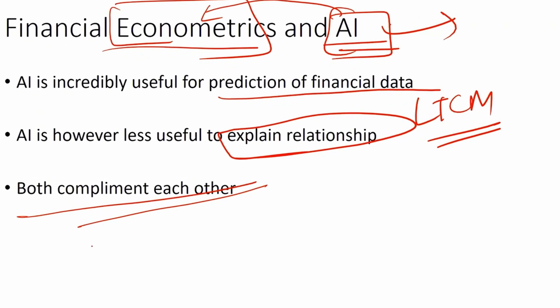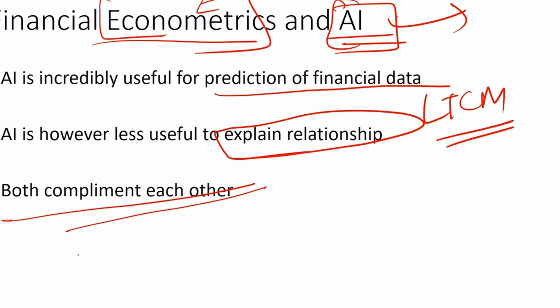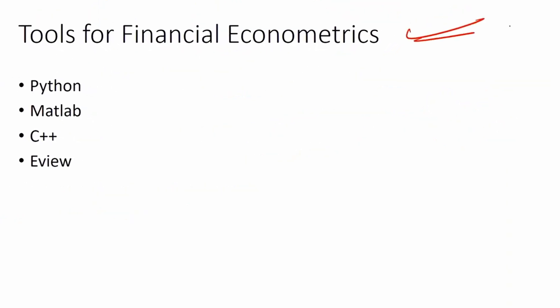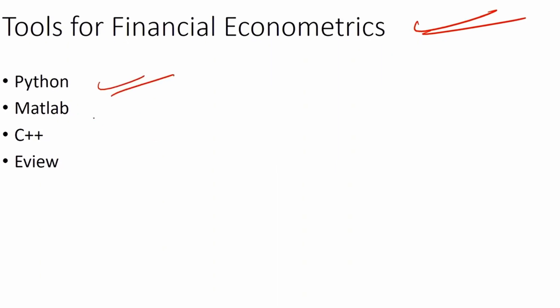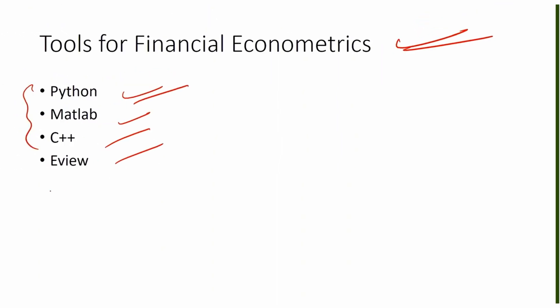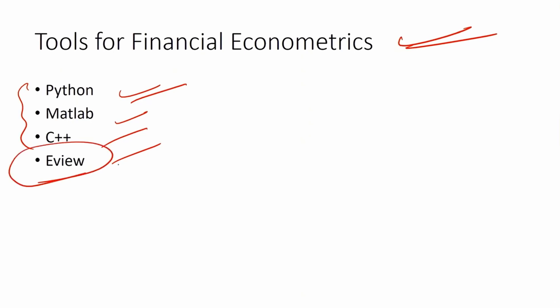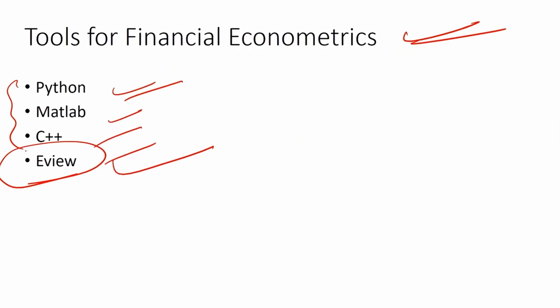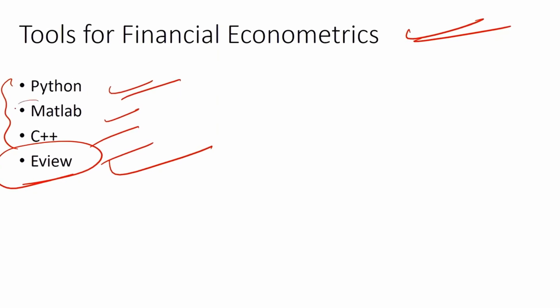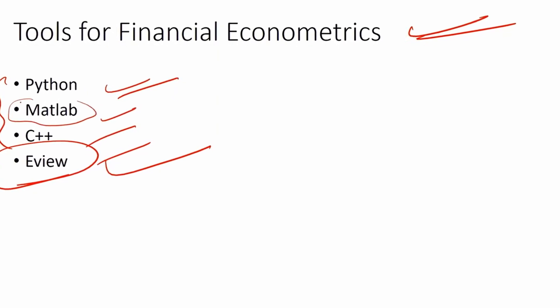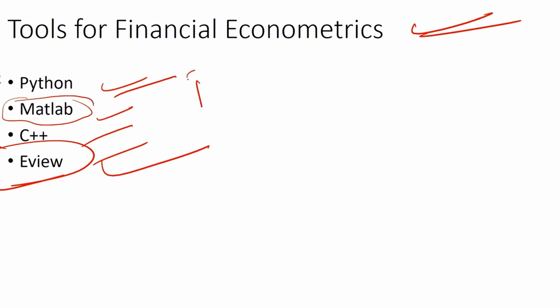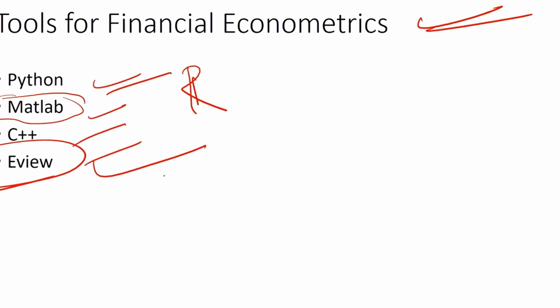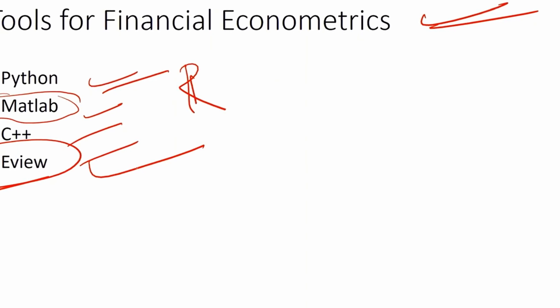Some of the tools that you can use in financial econometrics: Python, MATLAB, C++, EViews. EViews is not open source, but it's used more in academia. MATLAB is obviously proprietary. R is also very useful. These are some of the tools you can use for financial econometrics research.